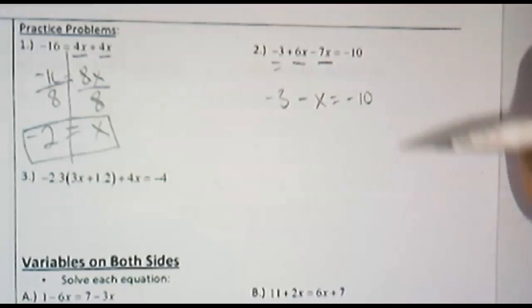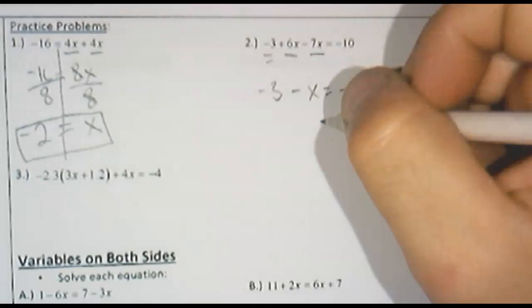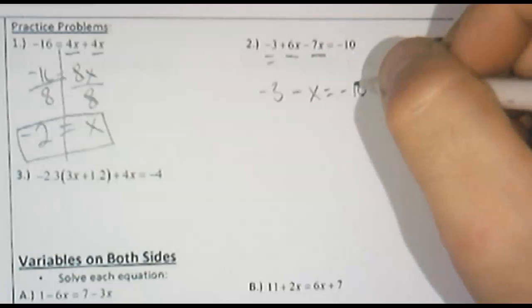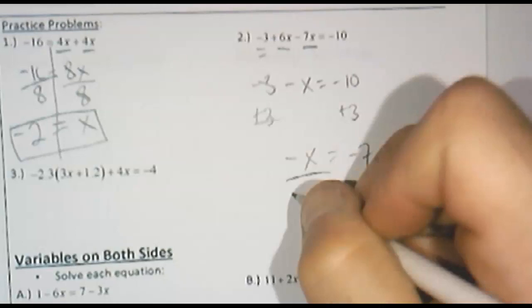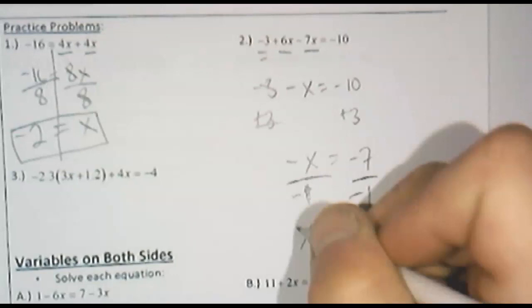And then I am following the DCMAM steps. Don't call me after midnight DCMAM. That's if you need to distribute, do that first. Then C, combine like terms. M, move the variables to one side if they're on both sides. And then really this problem didn't have any of that. This one now does have the a though, the add or subtract. Got to add 3. Bring down that negative x. Negative 10 plus 3 is negative 7. You will have to divide by negative 1 here to get x as opposed to negative x. So that'll make negative 1 will make a positive x. Negative 7 divided by negative 1 is positive 7.